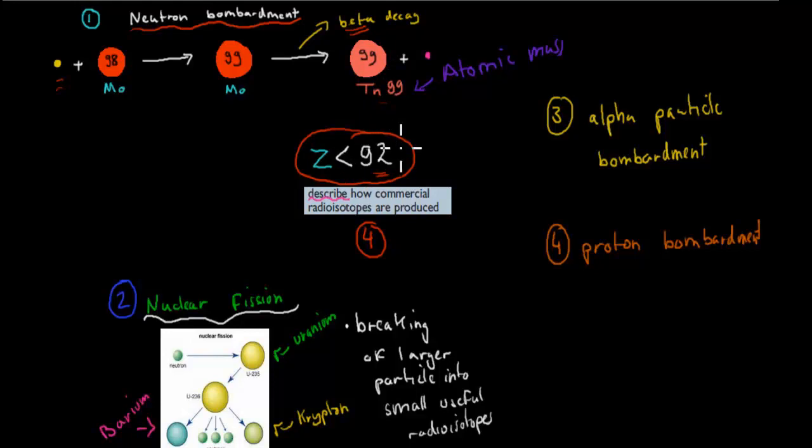And I said, the atomic number is 92 or less than 92. This is not the atomic number. This is the mass number. But it has an atomic number less than 92. This is one way we can create radioisotopes that are used for commercial uses. For example, technetium-99 through neutron bombardment.